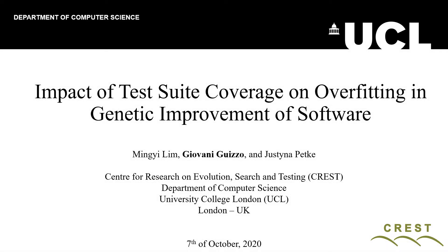Good afternoon. My name is Giovanni Guizzo. I'm a postdoc researcher in the CREST group at University College London. Today I'm going to present a paper that I wrote with two of my colleagues, Ming Lin and Justina Petk. The aim of the paper is 'Impact of Test Suite Coverage on Overfitting in Genetic Improvement of Software.'